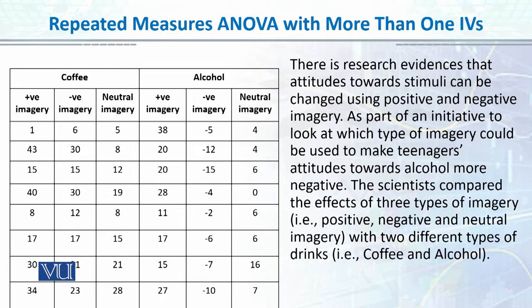Here is an example which we will do in detail in SPSS. There is research evidence that attitudes towards stimuli can be changed using positive or negative imagery. As part of an initiative to look at which type of imagery could make teenagers' attitudes towards alcohol more negative, scientists compared the effects of three types of imagery — positive, negative, and neutral — with two different types of drinks: coffee and alcohol.